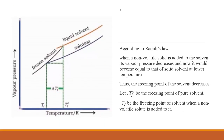According to Raoult's law, when a non-volatile solid is added to the solvent, its vapor pressure decreases, and it would become equal to that of the solid solvent at a lower temperature. As we add non-volatile solute, the vapor pressure of the solution decreases, and due to this decrease in vapor pressure, the freezing point of the solution also decreases. This can be seen clearly from the graph plotted between vapor pressure and temperature.